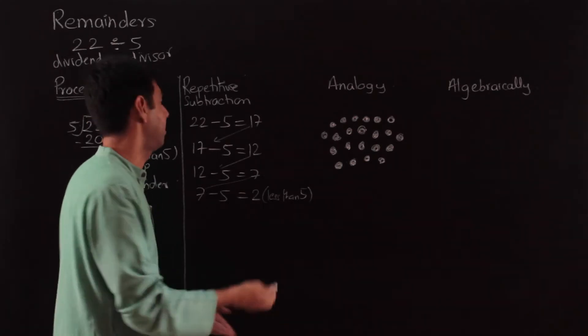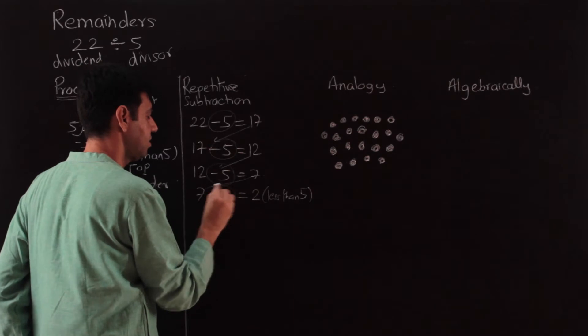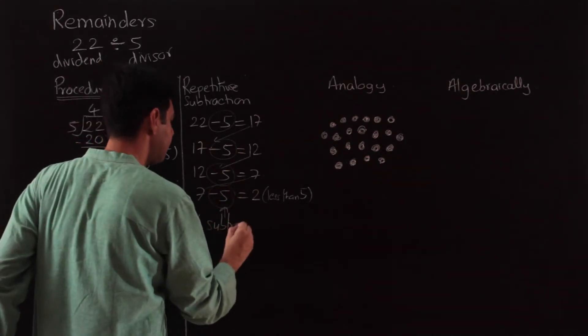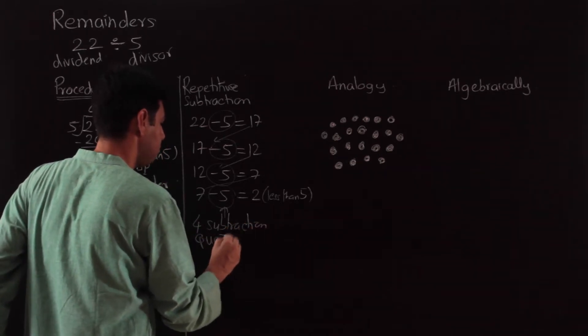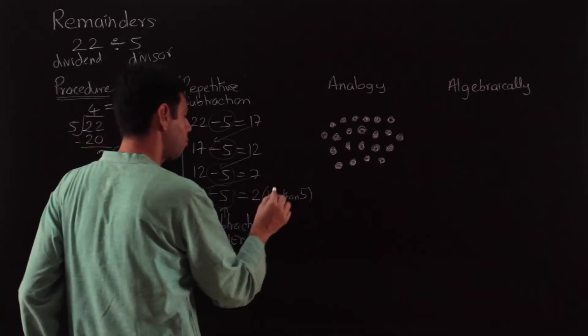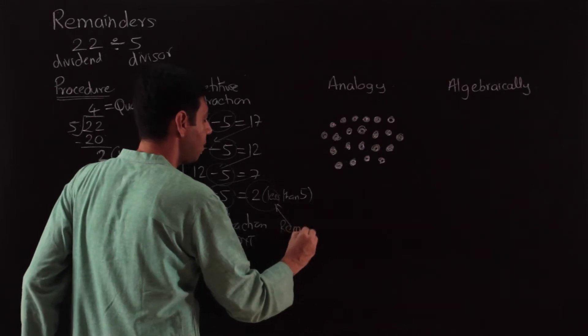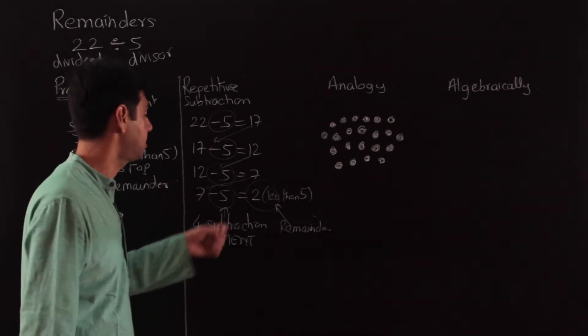So I have subtracted 5 once, twice, thrice, four times—I've done 4 subtractions, and this is the meaning of your quotient. Keep repeating the subtraction; how many times you can subtract becomes your quotient, whatever is left is your remainder in the end.